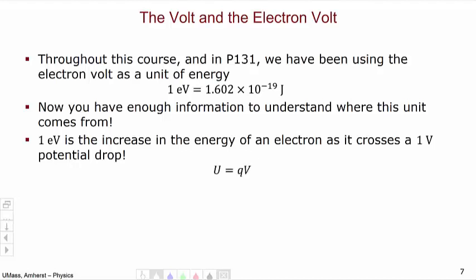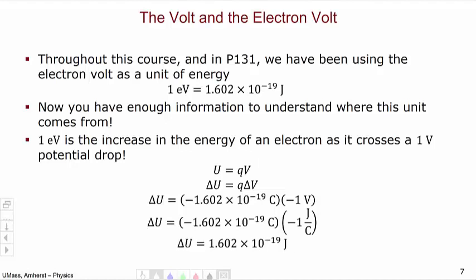To solve it out: we know U = QV, so the change in U is the charge times the change in potential. The charge of the electron is −1.602 × 10⁻¹⁹ coulombs, and a potential drop would be a change in potential of −1 volt. Multiplying it all out, we see that an electron going across a 1-volt potential drop has an increase in potential energy of 1.602 × 10⁻¹⁹ joules, which we recognize as 1 eV.